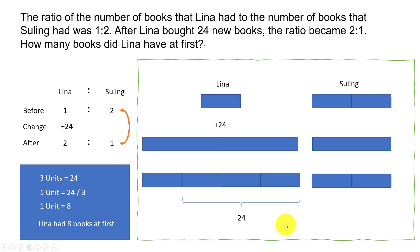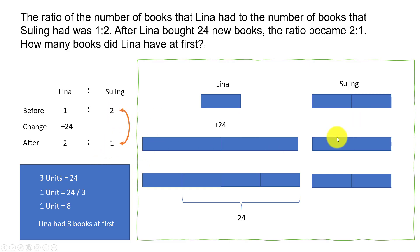To summarize, this is a ratio problem. When you try to solve ratio problems, first look for quantities that do not change. Su Ling had the same number of books before and after, and that is why we were able to say the two units before is represented as one unit after. That gave us the basis to relate the after unit to the before unit and then solve the problem.